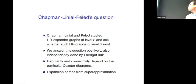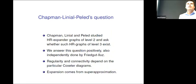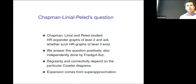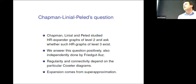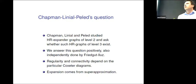So where does this come from? We got interested in it by a question by Chapman, Linial, and Peled, which was asked in 2019. This question originates in theoretical computer science and so-called PCP theory — probabilistic checkable proofs. That's as much as I know about it, but that's where the question comes from.